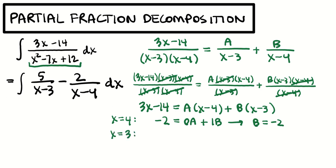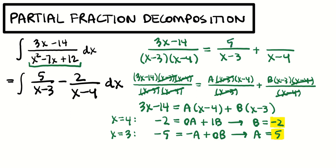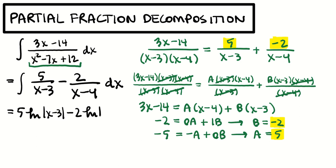Then I choose another convenient x — x equals 3 — whatever makes those factors equal to 0. Plugging in x equals 3: 9 minus 14 is negative 5, equals (3 minus 4) is negative 1 times A, plus (3 minus 3) is 0 times B. So if negative A is negative 5, that means A equals 5. Now I know A is 5 and B is negative 2. The integral becomes 5 natural log of the absolute value of x minus 3, minus 2 log of the absolute value of x minus 4, plus c. That's a solid example of integrating with partial fraction decomposition.